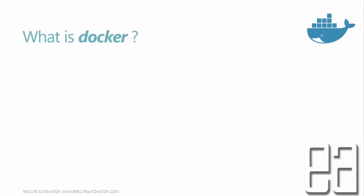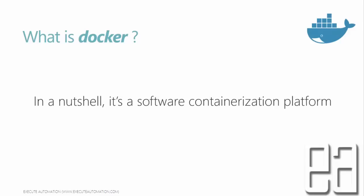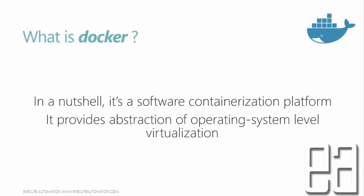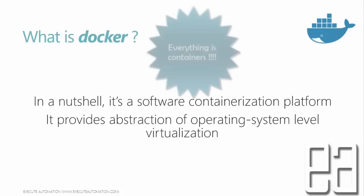What is Docker, and why are we suddenly discussing Docker at executeautomation while we were discussing the automation testing world? Docker in a nutshell is a software containerization platform, and it provides the abstraction of operating system level virtualization. It doesn't really sound like it has anything to do with automation — of course not — but Docker is very, very handy in terms of automation testing. As you start reading and understanding this course, you will understand why we are actually heading towards Docker in executeautomation.